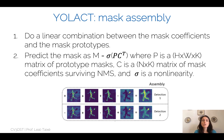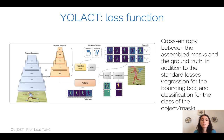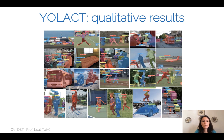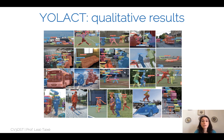Thanks to these coefficients we can separate the person from the racket. The loss for YOLACT is simple cross-entropy between the assembled mask and ground truth, in addition to standard bounding box regression and semantic class classification losses. Results are quite good — many semantic classes and instances with significant occlusion are correctly separated. The method is fast because it's a one-stage segmentation method.